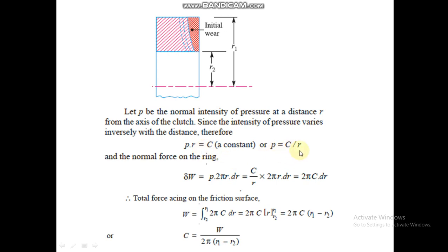In uniform wear theory, p equals c divided by r. The normal force on a ring element is pressure times area, which is p times 2πr dr. Substituting p = c/r gives 2πc dr. The total force acting on the friction surface is the integral from r2 to r1 of 2πc dr.